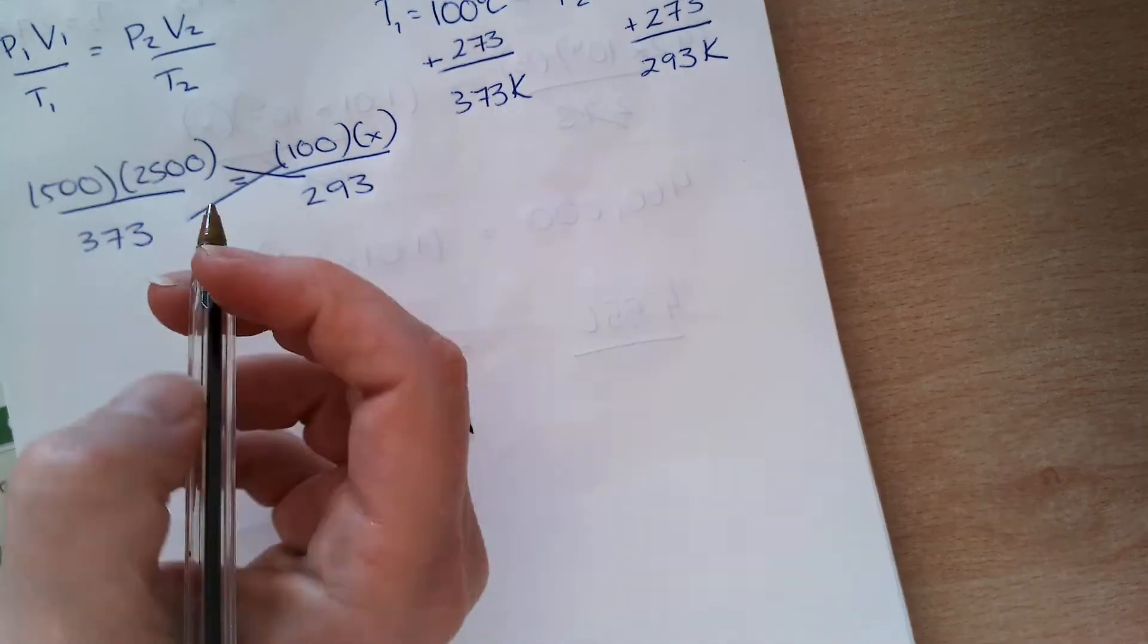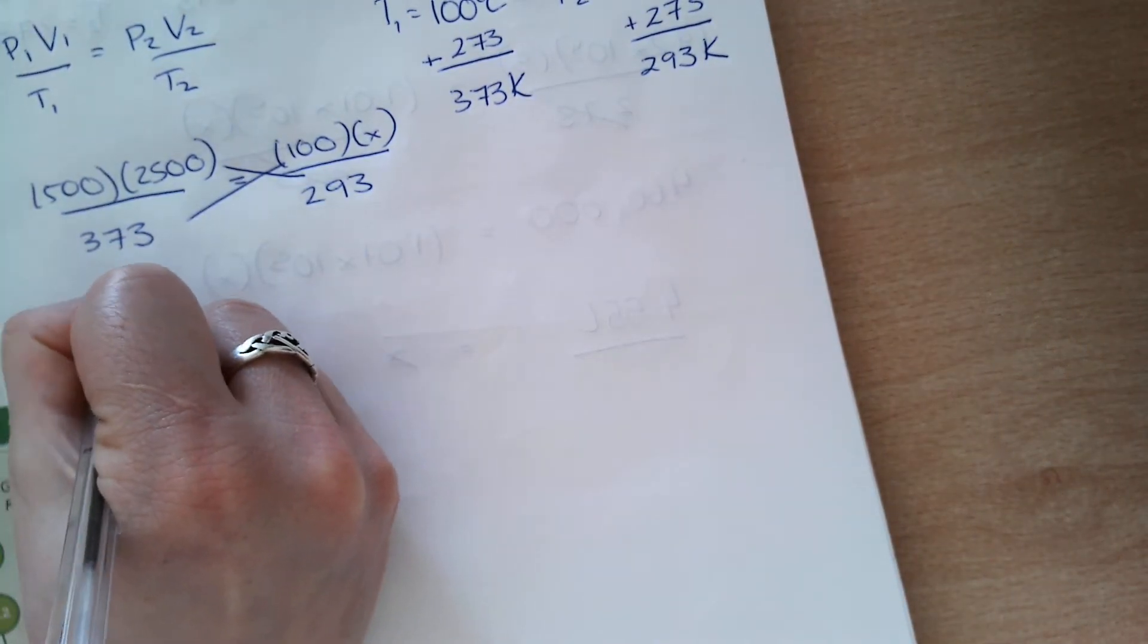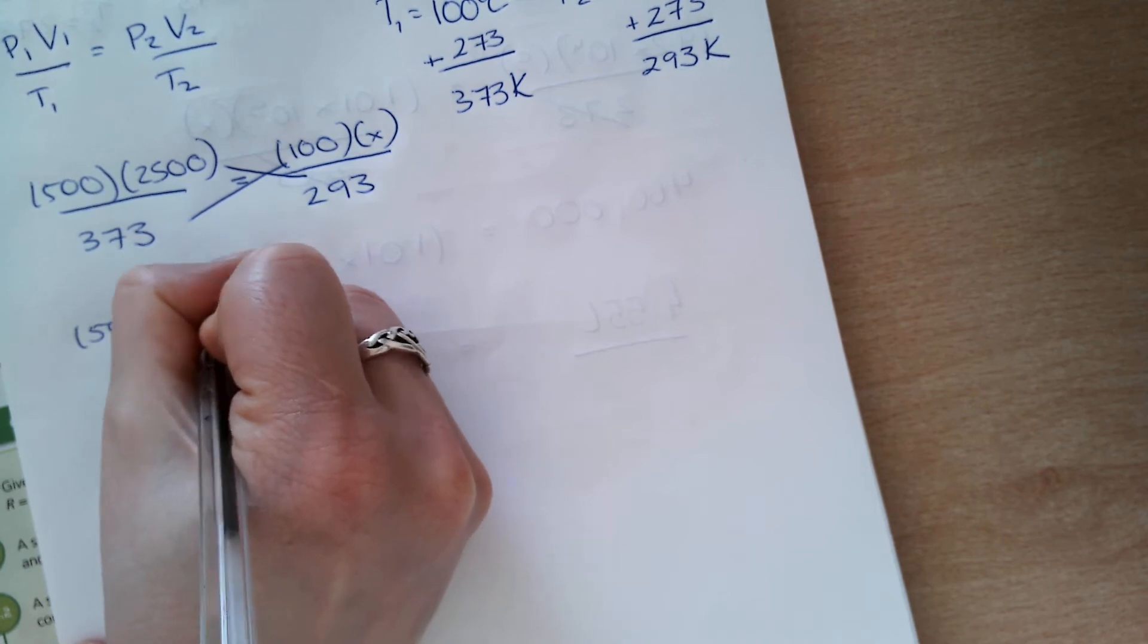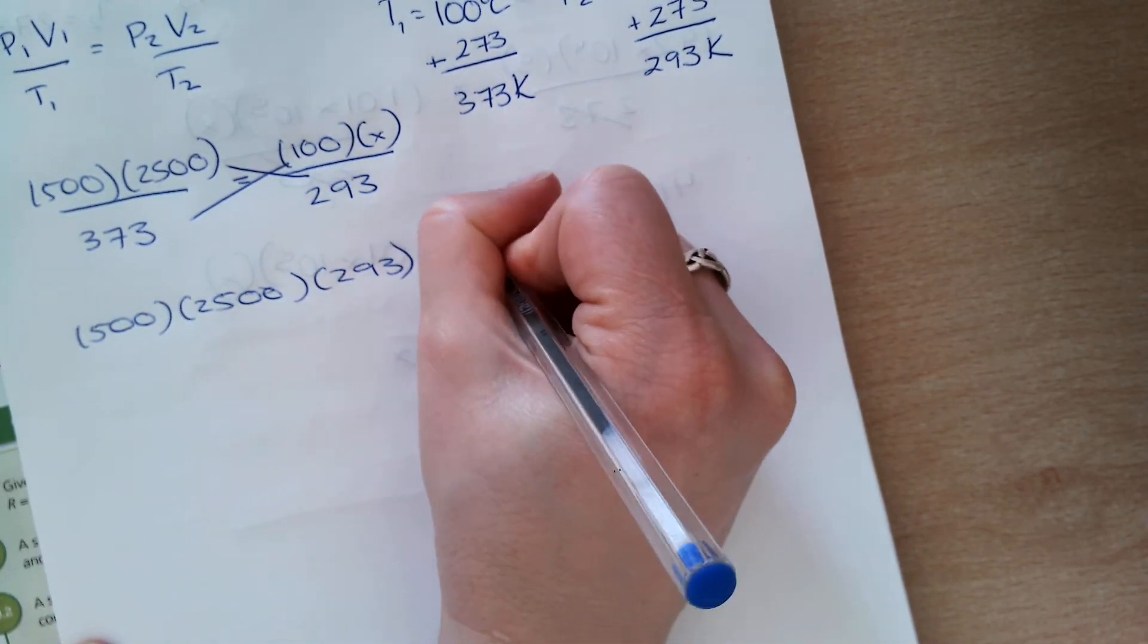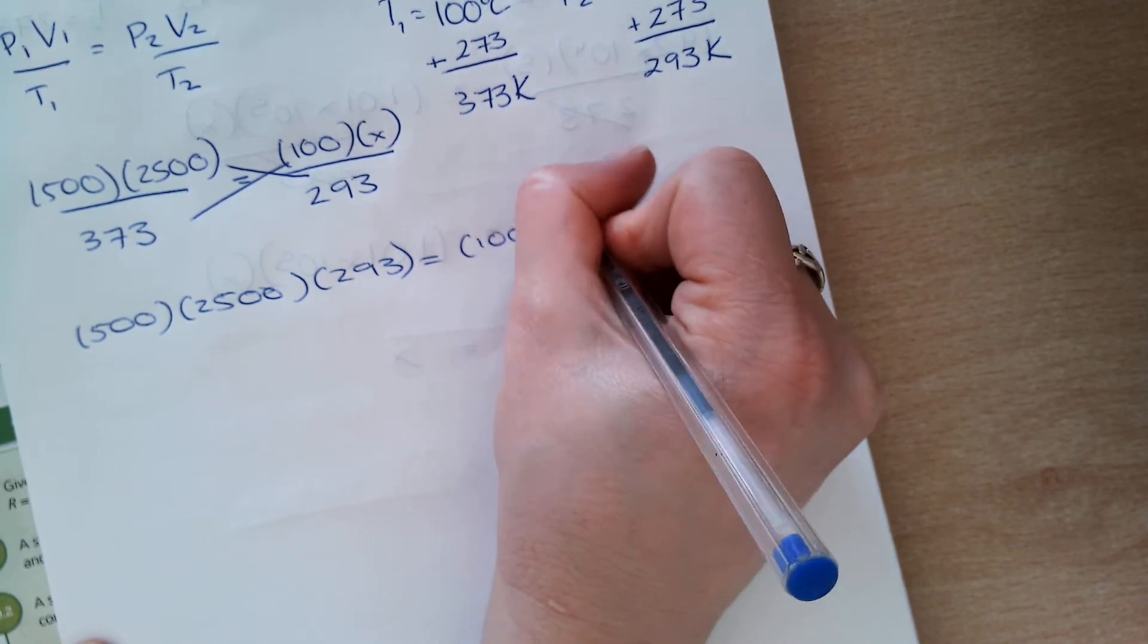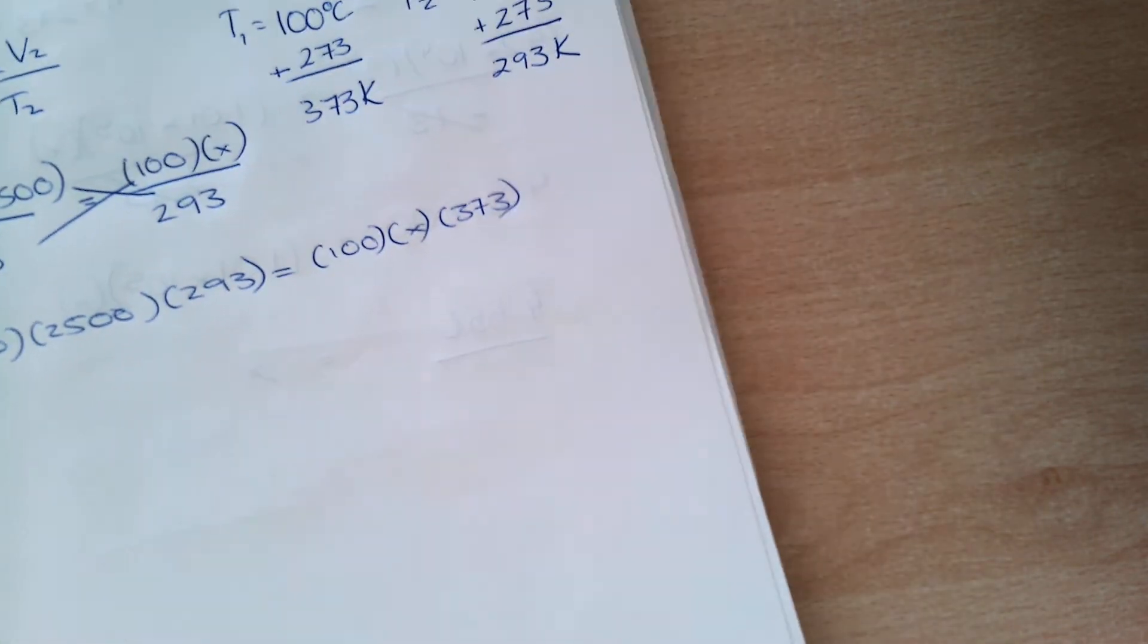So, I multiply here across the equal sign. So, I have 500 by 2,500 by 293 equals 100 by X by 373.